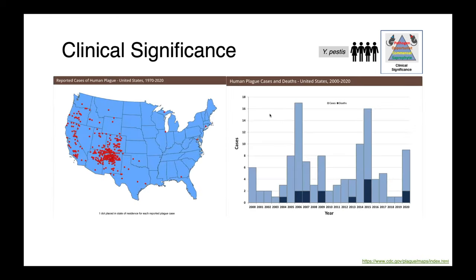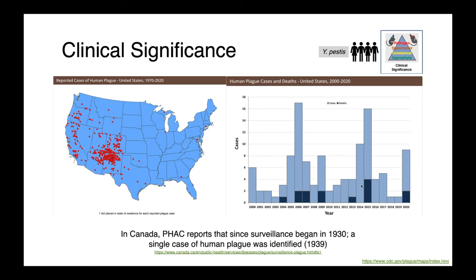While there's a lot of interesting history associated with plague, it's also a contemporary issue. CDC data shows the distribution of plague cases over a 50-year period between 1970 and 2020, with the majority of infections occurring in the four corners region — New Mexico, Arizona, Utah, and Colorado. There are somewhere between one and 17 cases a year with zero to four deaths annually. Here in Canada, the Public Health Agency reports only a single human case of plague since 1930, back in 1939 — not commonly encountered north of the border.